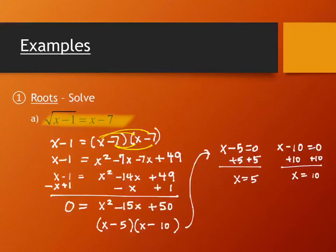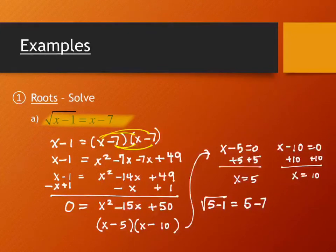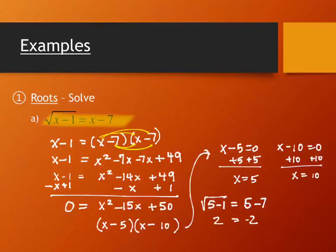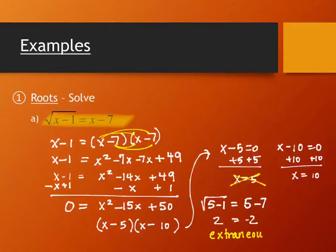We'll plug both back into the original equation. Starting with x equals 5: the square root of 5 minus 1 should equal 5 minus 7. The left side gives the square root of 4, which is 2 — but the right side gives negative 2. The signs don't match; this doesn't work. When the signs are different like this, that's exactly what squaring can do — it eliminates the sign difference. This false solution is called an extraneous solution: it comes out of the algebra but doesn't satisfy the original equation.